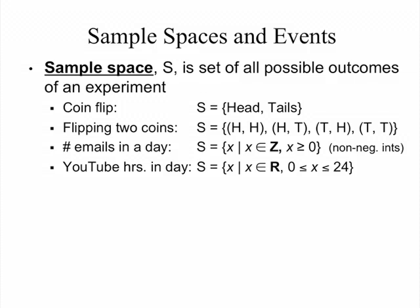We can think of a bunch of different things by formally defining their sample space. A coin flip has a sample space of heads or tails, assuming it doesn't land on its side like that Twilight Zone episode. Flipping two coins, you can think of the sample space as all the ways of getting heads or tails on two coins — heads-tails is different from tails-heads. The number of emails you get in a day could be something that is potentially unbounded. And the number of hours you spend on YouTube can give us real-valued sample spaces.